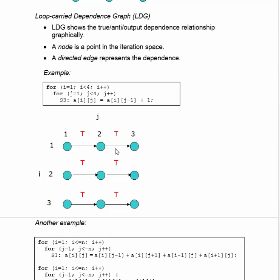We see dependences in this direction along the rows. We don't see any dependence from (1,3) to (2,1) because there are no dependences there. The dependences are all along the rows — between columns within a row — and there are no dependences between one row and another.